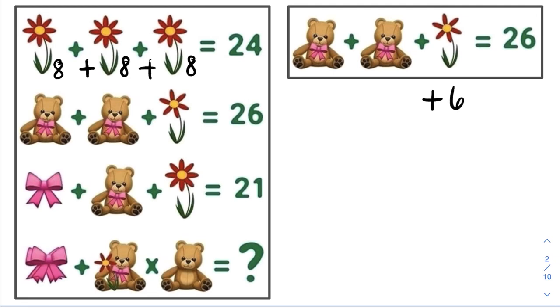For each teddy bear with ribbon, I will represent this as x. So we have x plus x plus 6 is equal to 26. Combining like terms, x plus x is 2x plus 6 is equal to 26. Now subtracting 6 from both sides, we have 2x is equal to 20.